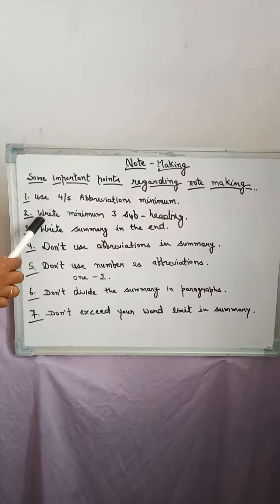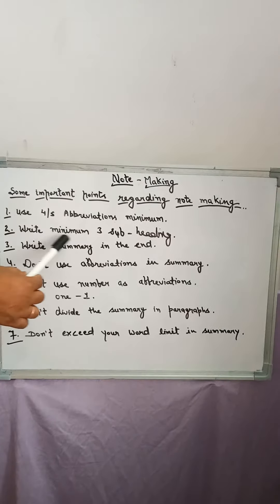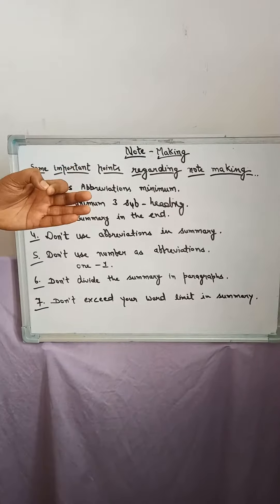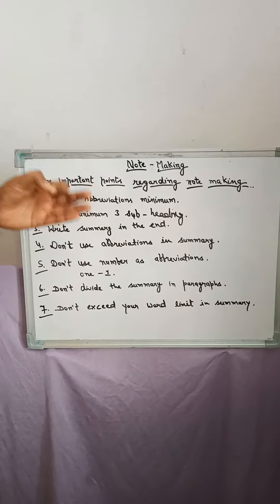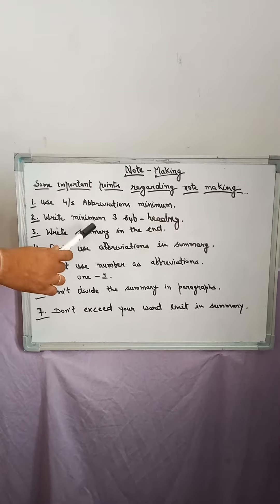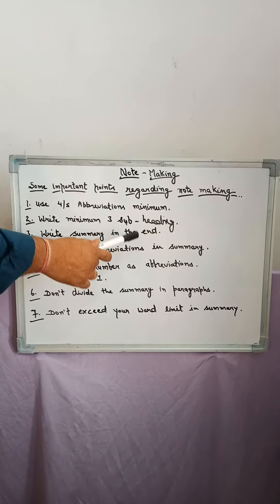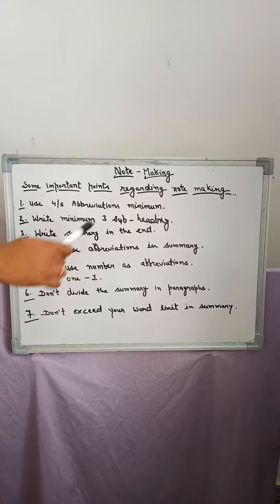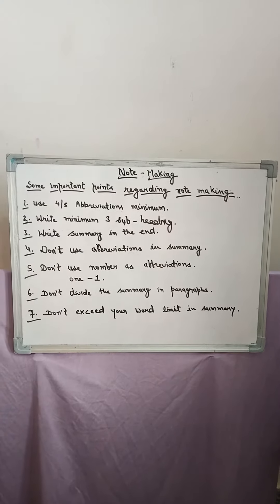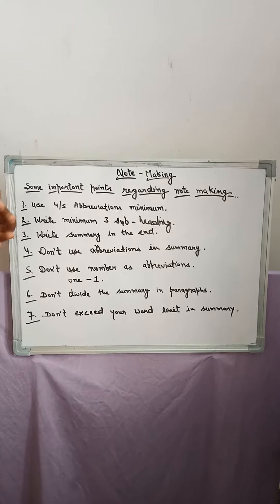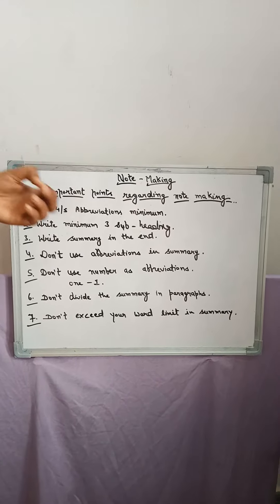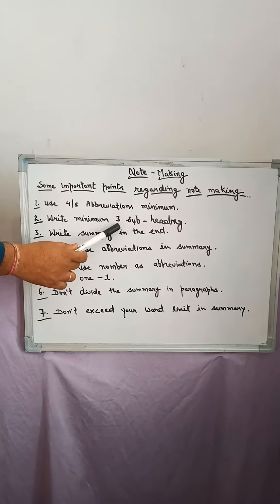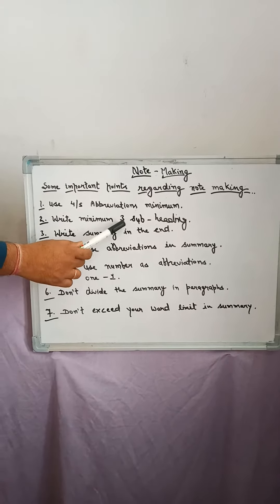Second point: write minimum three subheadings. When you divide the whole passage into three or four paragraphs — one paragraph, one subheading; second paragraph, second subheading; and third paragraph, third subheading. So it is very convenient for you. At least you should divide the whole passage into three paragraphs.